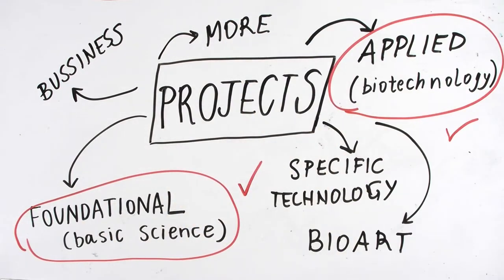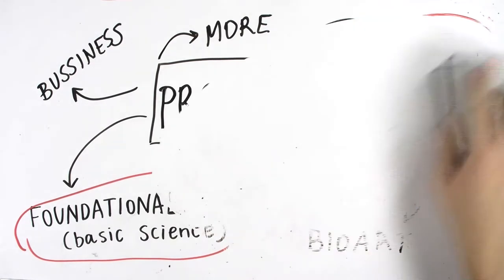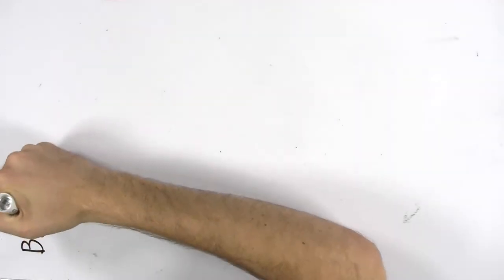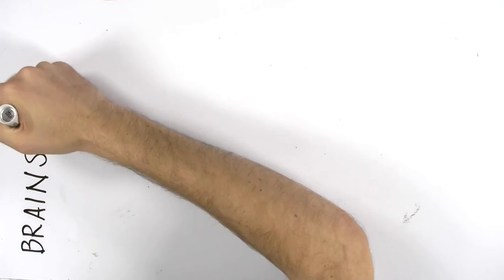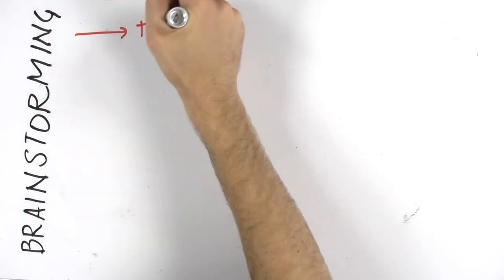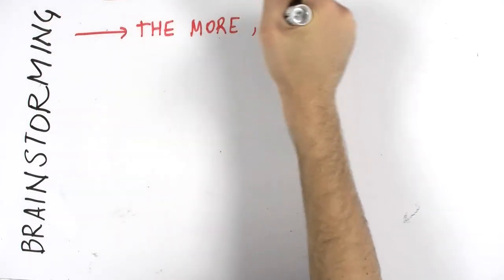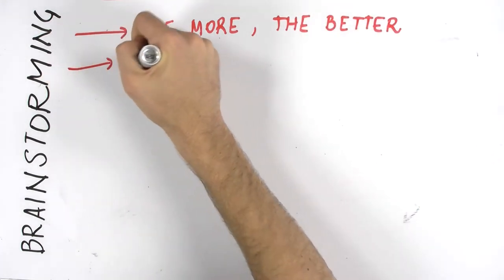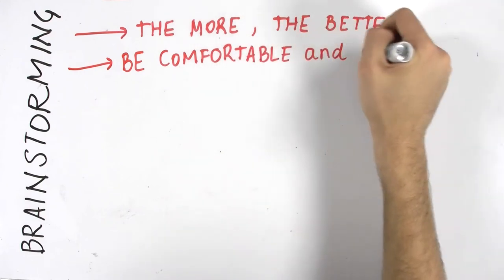To brainstorm, first try to come up with a list of ideas individually, then organize a meeting or even an entire weekend where you can discuss your ideas with the group. When you brainstorm, you should think about some simple rules. First, when brainstorming, quantity is quality—the more ideas you throw, the higher chance you'll find a valuable one. Secondly, you need to feel comfortable in your group and not be concerned that others will judge your idea.